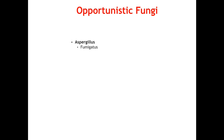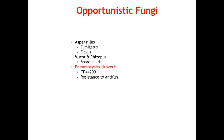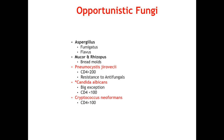As always we start off with their names starting with Aspergillus fumigatus and flavus, Mucor and Rhizopus which are our bread molds, Pneumocystis jirovecii who has an inherent resistance to antifungals, Candida albicans who's our big exception, and finally Cryptococcus neoformans. The mnemonic I used to remember them in that order is: all moms potentially can cry.